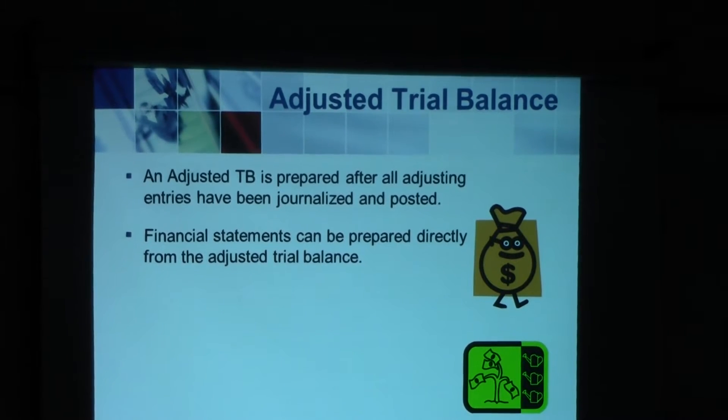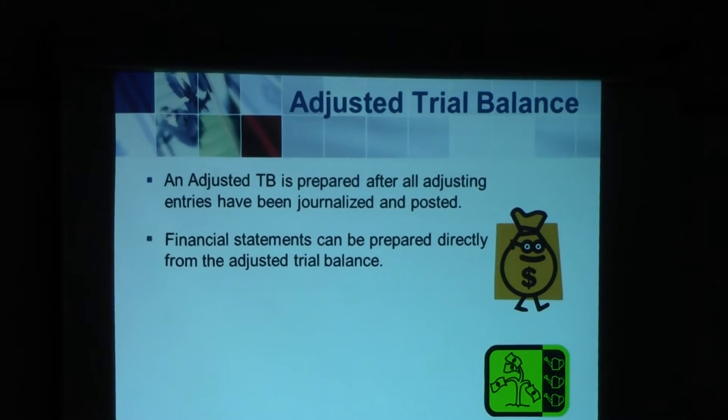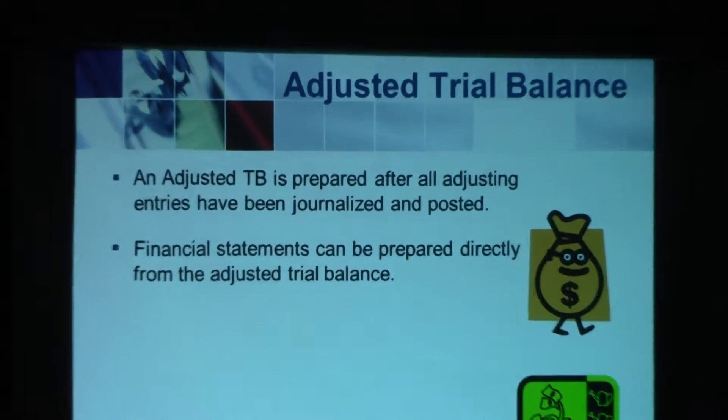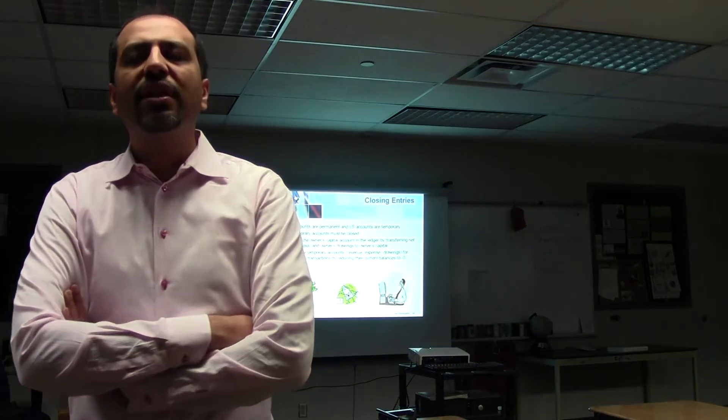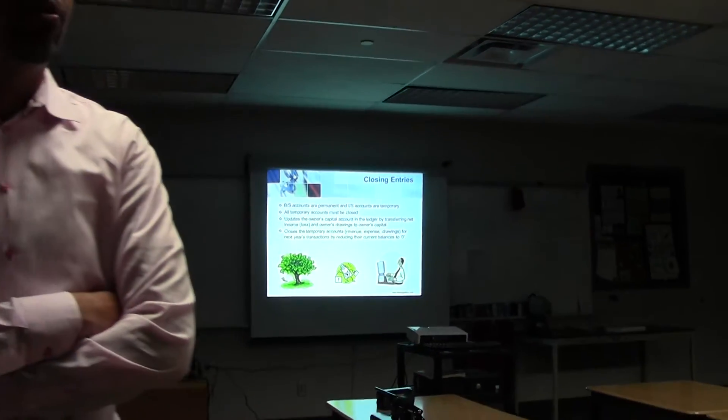Once we have finished with the adjusting entries, we produce an adjusted trial balance. With all the software available, we call it a trial balance after adjustments — the title doesn't change, it just means you now have a trial balance with the adjusting entries included. After all of this is done, we have to learn how to close accounts.